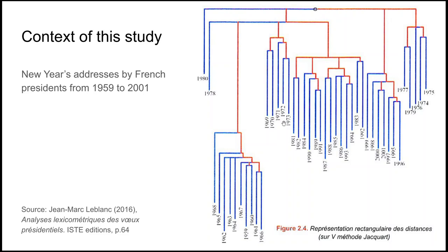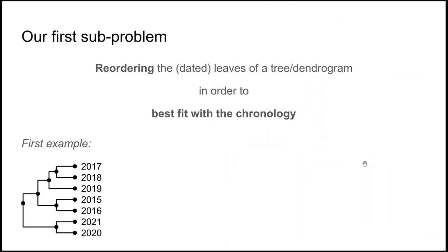But actually, with these kinds of trees or dendrograms, you may know that it's completely possible to reorder the children of one node of the tree. So here, for example, to highlight the fact that there is a chronological ordering, we could have put 1978 in between those two periods, where you have the 70s here and the 80s here. And maybe this would have made more clear the fact that there is a chronological evolution. And we could have done some other rearrangements like this in the tree just to visualize better this chronological signal in the tree. And so this is our first problem. How do you do this kind of reordering of the leaves of the dendrogram to best fit with the chronology?